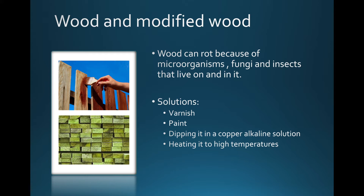To protect wood, we can varnish it or paint it — varnish is like paint but transparent. We can dip it in a copper alkaline solution, which turns it green as seen in the picture on the left, and that kills those microorganisms. Or we can heat it to very high temperatures, which also kills the microorganisms. Paint and varnish create a barrier so insects don't get inside the wood.